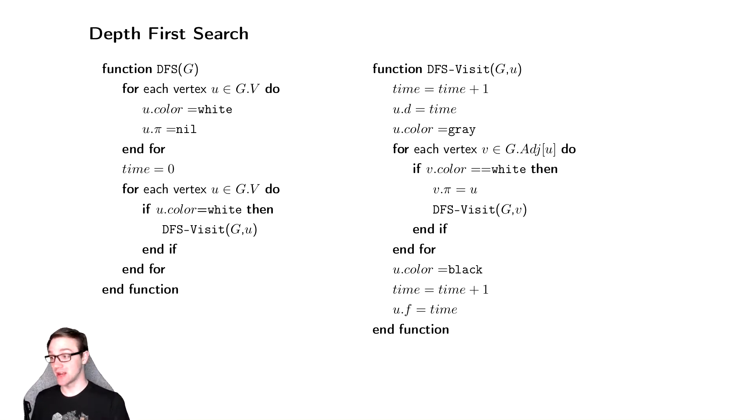The one thing we're not keeping track of is distance. Instead we're going to keep track of time. This time thing is going to seem a little weird. Once we start running the algorithm we'll see what happens with it. This is going to let us know when we start exploring a vertex and when we finish exploring a vertex. We're going to have two times: discovery time and finishing time. So u.d is the discovery time and u.f is the finishing time.